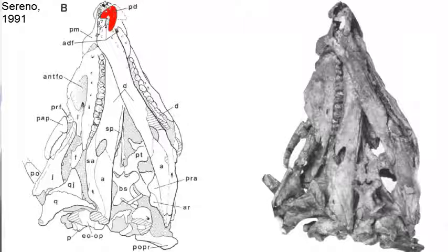The known skull of Lesothosaurus has an additional feature that makes it unique: it has a new bone, the predentary, which is located at the tip of the lower jaw, or the chin of the dinosaur. A predentary bone is a characteristic found in Ornithischian dinosaurs, and we will look at the purpose of this bone in the next video.